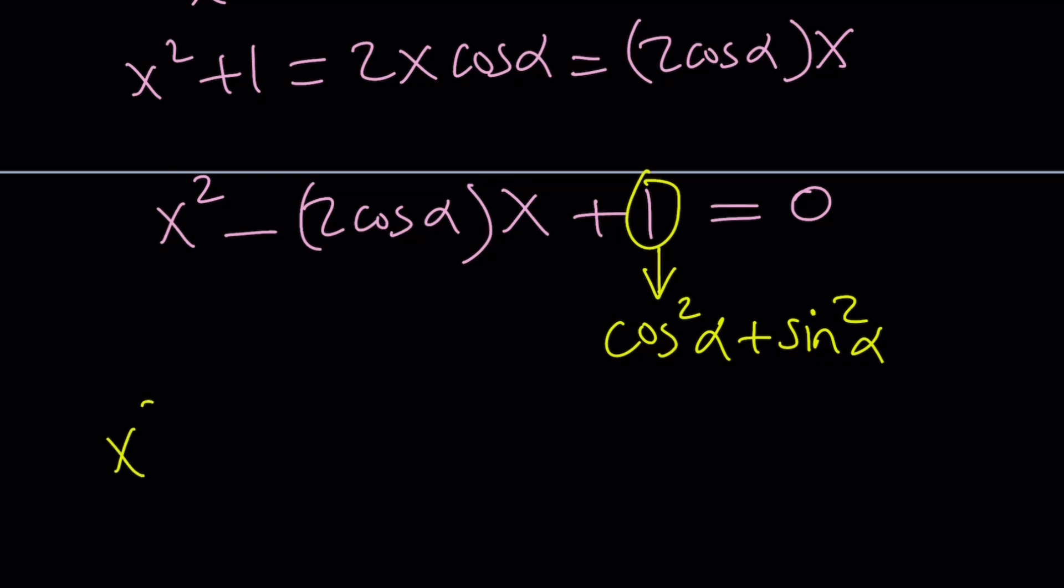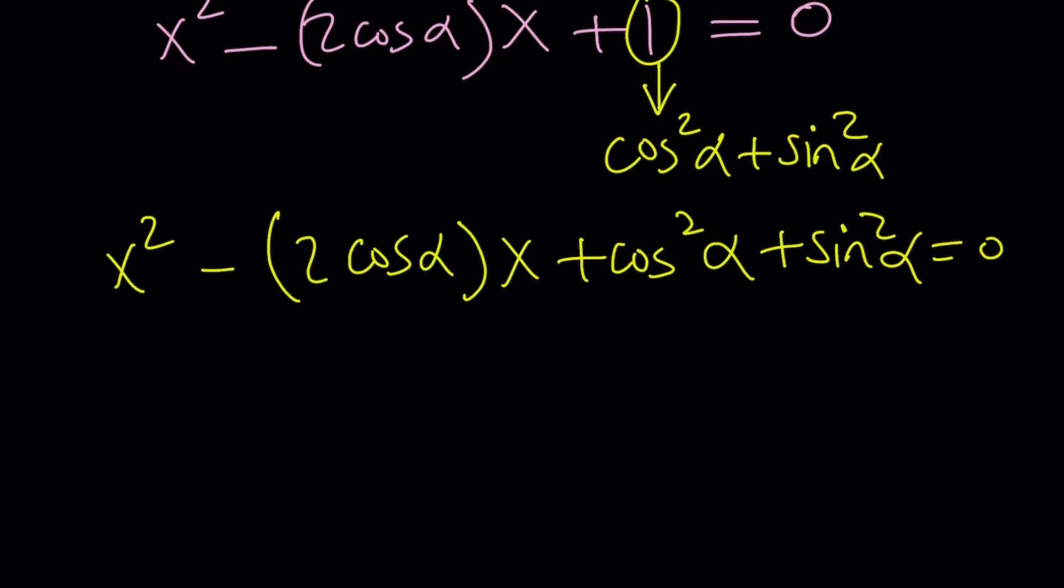So I replace 1 with cosine squared alpha plus sine squared alpha. And then guess what you get from here? Something super duper interesting, in my opinion. You may or may not agree. So here's what I'm going to do. Replace the 1 with that. And this is my quadratic. Now, I want you to focus on this piece. Take a look at this. And take a very hard look. Don't you appreciate that? What is that? That is a perfect square.